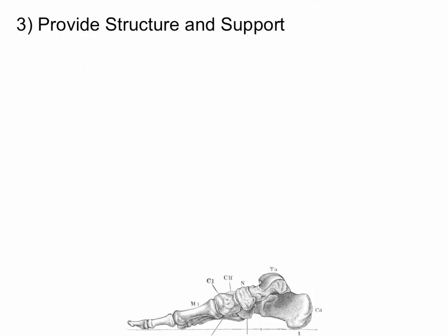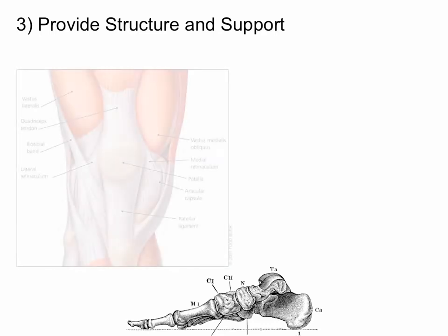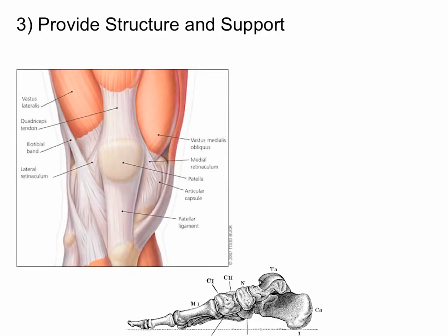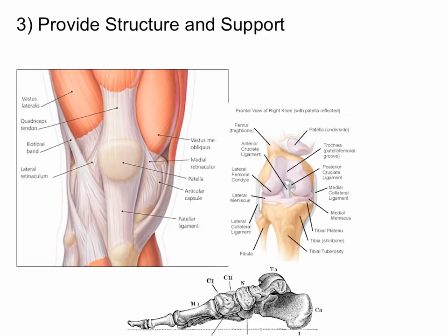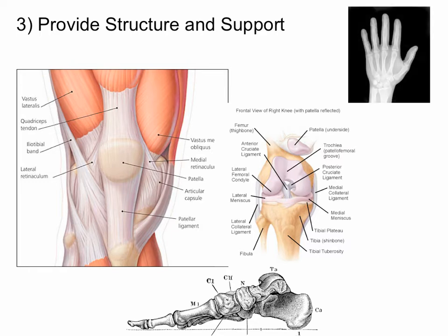Connective tissues also provide structure and support. Bone, tendons, ligaments, and cartilage are all types of connective tissues that serve this structural function.